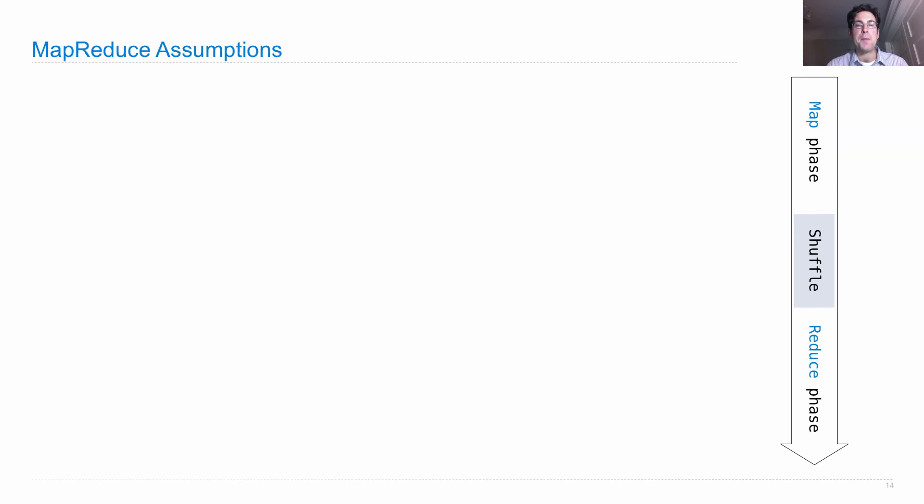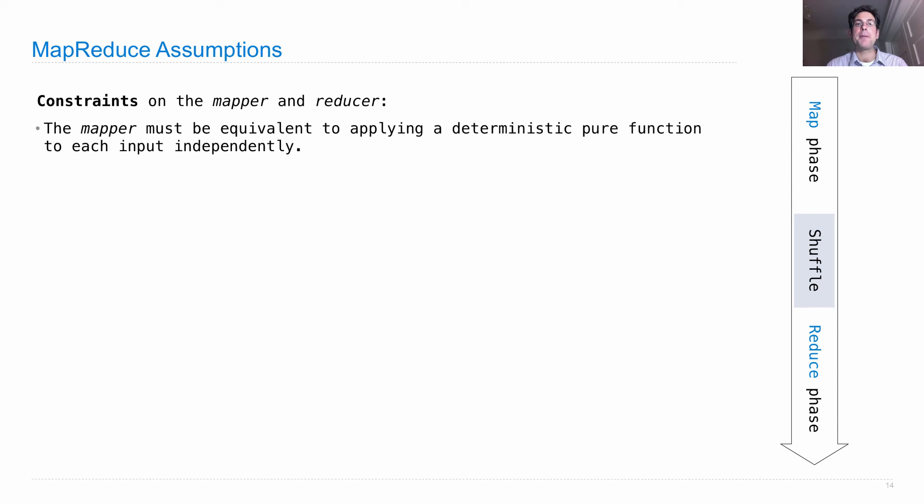There are certain assumptions being made under MapReduce that allow it to divide up the work in this way. The mapper must be equivalent to applying a deterministic pure function to each input independently.